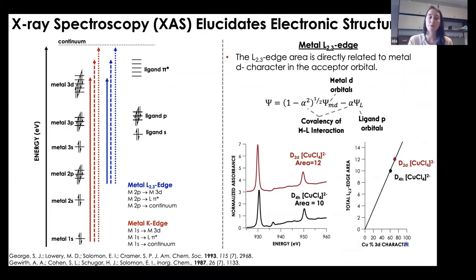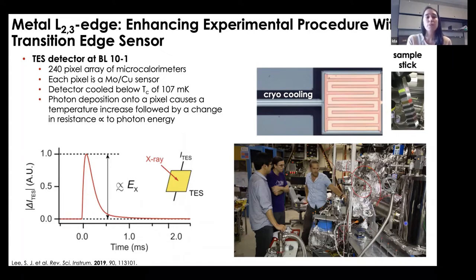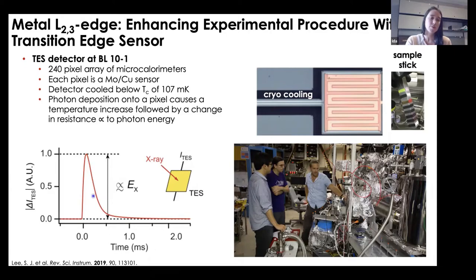We set out to perform these same L-edge experiments, working with a talented group of scientists at SSRL on beamline 10-1 using their transition edge sensor. The TES is a large silver cylinder — a 240-pixel array of microcalorimeters where each pixel is a molybdenum-copper sensor, cooled to about 100 millikelvin. As you excite your sample and photons are deposited onto those pixels, they cause a very small temperature increase followed by a change in resistance, and that change in resistance is proportional to the photon energy.